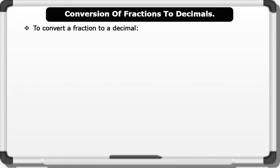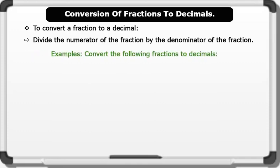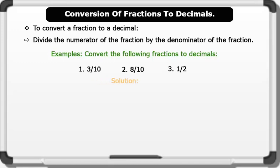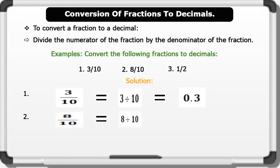Conversion of fractions to decimals. To convert a fraction to a decimal, we divide the numerator of the fraction by the denominator. Let's see some examples. Convert the following fractions to decimals: 1. 3 over 10; 2. 8 over 10; 3. 1 over 2. Solution: 1. 3 over 10 equals 3 divided by 10, which gives us 0.3. 2. 8 over 10 equals 8 divided by 10, which gives us 0.8.